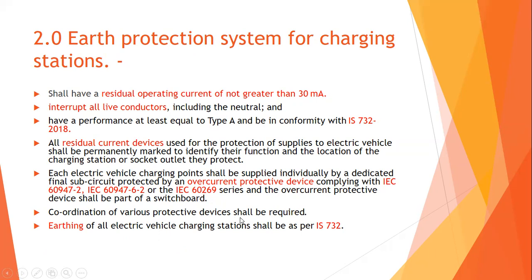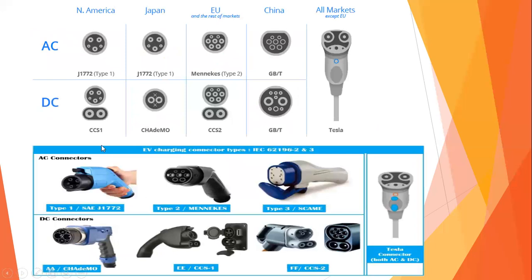The coordination of various protection devices shall be required — from the incoming supply right through to the electric vehicle, all protection devices should be coordinated. The wiring of all electric vehicle charging stations shall be as per IS 732. Various EV socket standards exist globally: in America the J1772 model is used for AC and CCS1 for DC; IEC 62196 is the IEC standard used internationally for EV charging connectors.